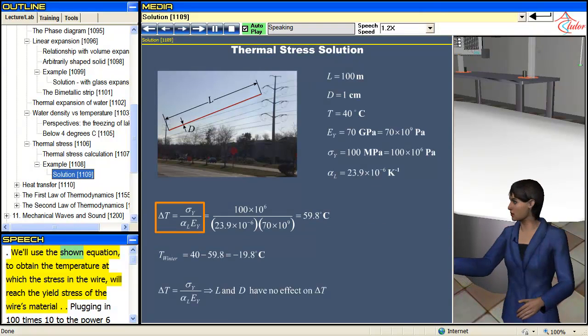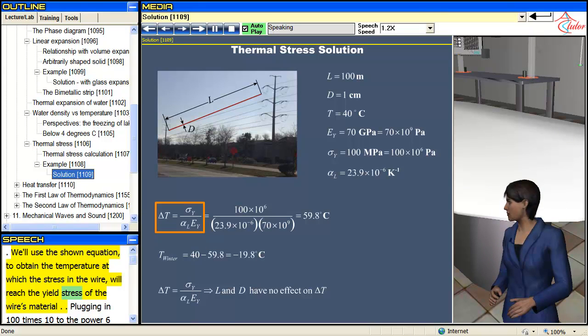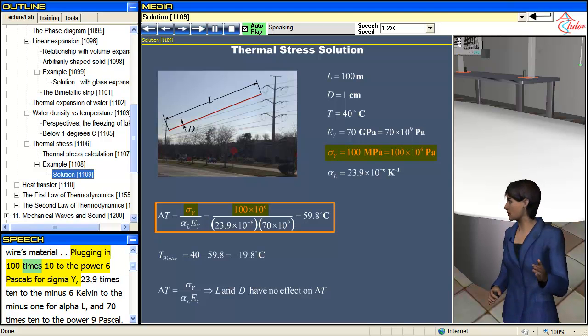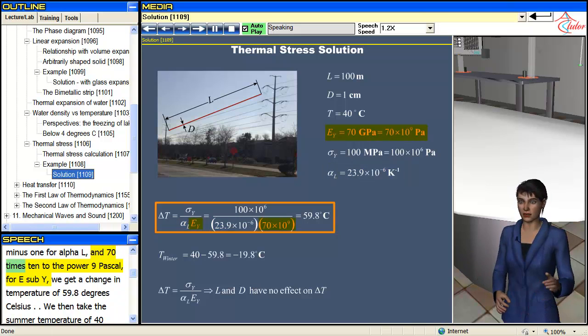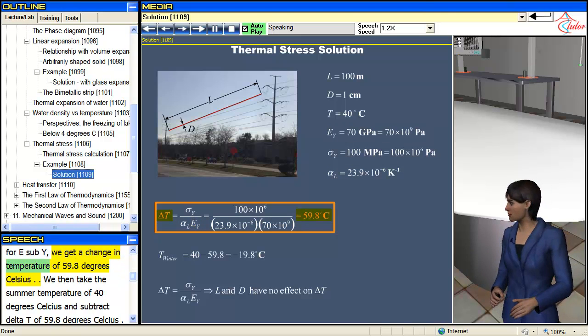We'll use the shown equation to obtain the temperature at which the stress in a wire will reach the yield stress of the wire's material. Plugging in 100 times 10 to the power 6 pascals for σY, 23.9 times 10 to the minus 6 Kelvin to the minus 1 for αL, and 70 times 10 to the power 9 pascal for EY, we get a change in temperature of 59.8 degrees Celsius.